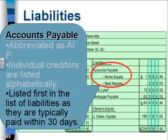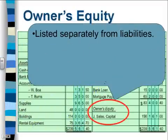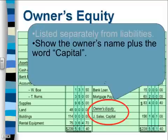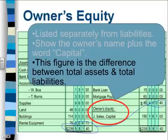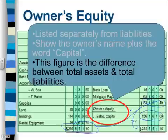You'll notice in the textbook it says bank loan is first — either way is acceptable. Owner's equity is listed separately from liabilities but still on the right hand side. You always show the owner's name plus the word 'capital' with a comma between — for example, J. Salus, Capital. This figure is the difference between total assets and total liabilities. If we take our total assets and subtract our total liabilities, it should equal our capital.